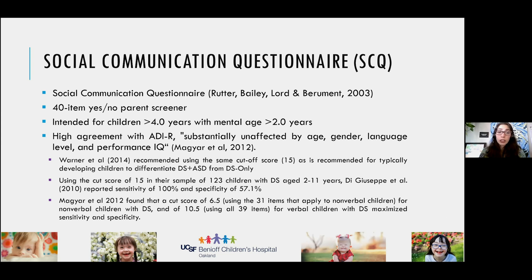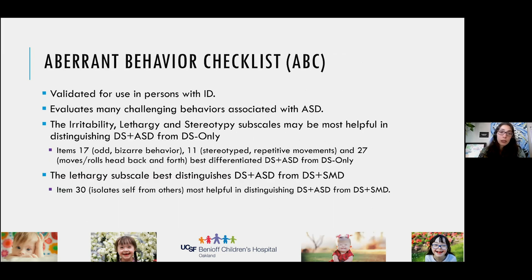The Social Communication Questionnaire is a 40-item yes-or-no parent screener, intended for children of chronological age over four years with a developmental age of at least two years. It was found to have high agreement with the ADIR — the Autism Parent Interview — and is substantially unaffected by age, gender, language level, and performance IQ. The Aberrant Behavior Checklist has also been researched specifically in Down syndrome and autism, with the irritability, lethargy, and stereotypy subscales being perhaps most helpful. It is also validated for use in people with intellectual disability.